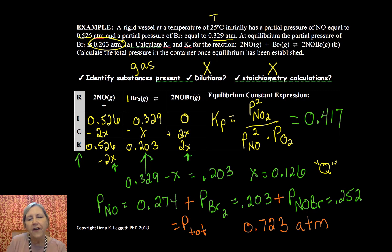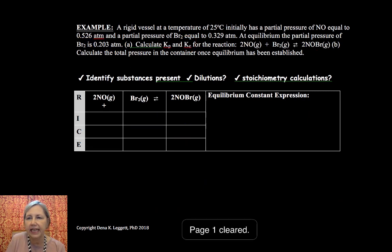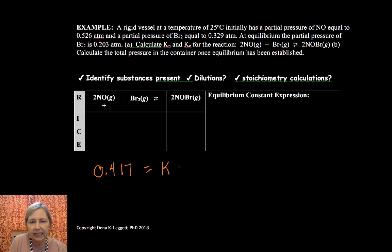And then finally, especially if you are in college chemistry, you will have to go back and forth between KP and KC. And to do that, we have KP, which is 0.417, is equal to KC times R, 0.0821, times T, and that's got to be in Kelvin. You can only use Celsius if it's a delta T. So you've got to convert that to Kelvin.